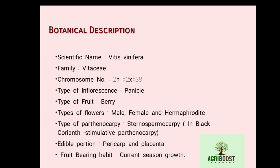An example of stenospermocarpy is the Thompson Seedless variety. In Black Corinth, stimulative parthenocarpy is present. Stimulative parthenocarpy means the plant produces fruit only after stimulation — either through pollination or any other method. The edible portion of grape is the pericarp and placenta.